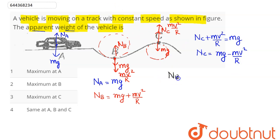So here we can compare: N_B is greater than N_A and is greater than N_C. That is, apparent weight is maximum at point B and least at point C. So apparent weight is maximum at B. Option number 2 is the correct answer.